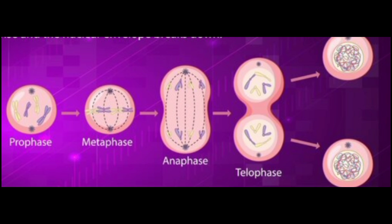The second phase is metaphase — the chromosomes line up in the middle of the cell. The third phase is anaphase — the chromosomes are pulled apart into the opposite ends of the cell by spindle fibers.